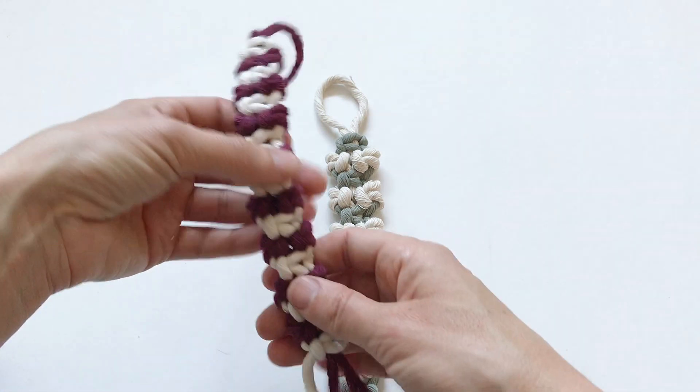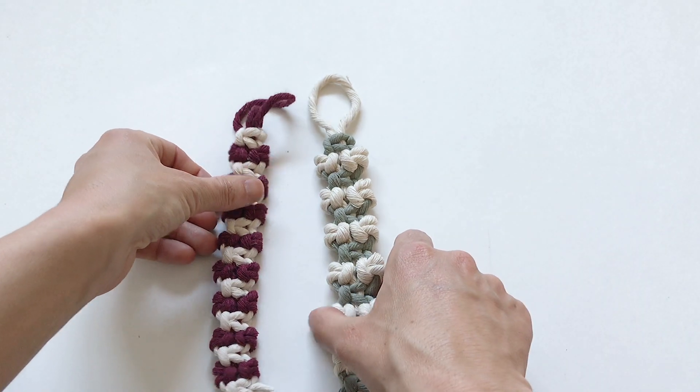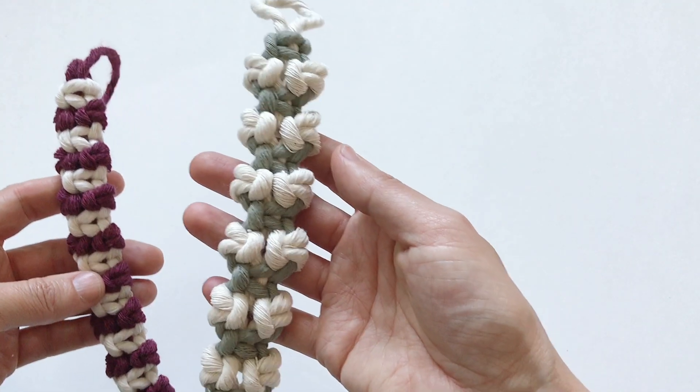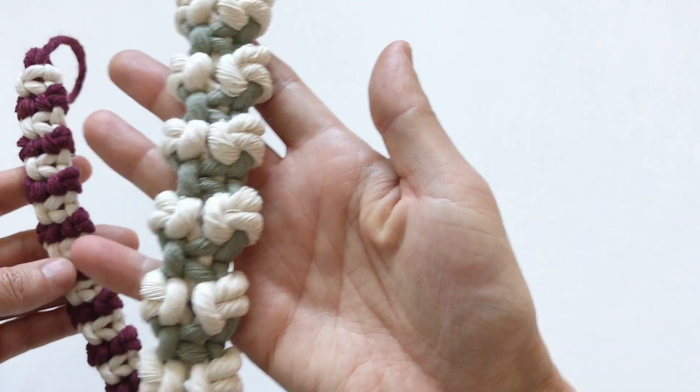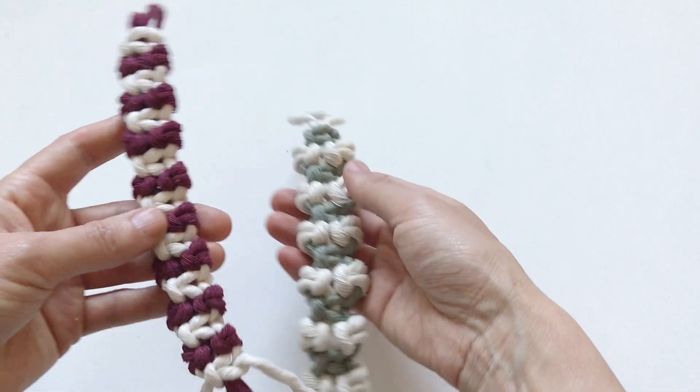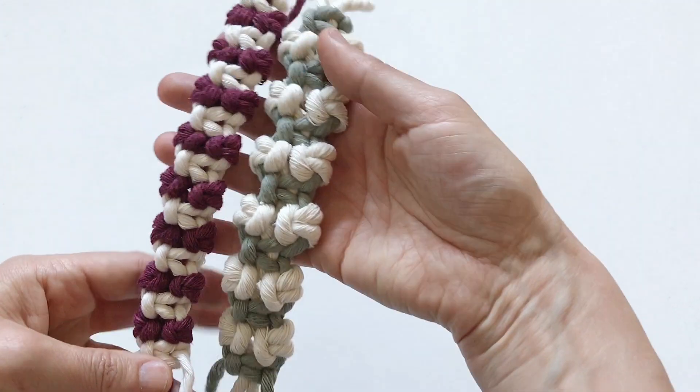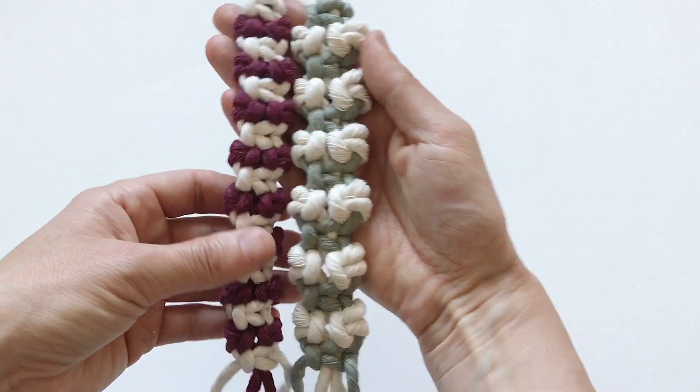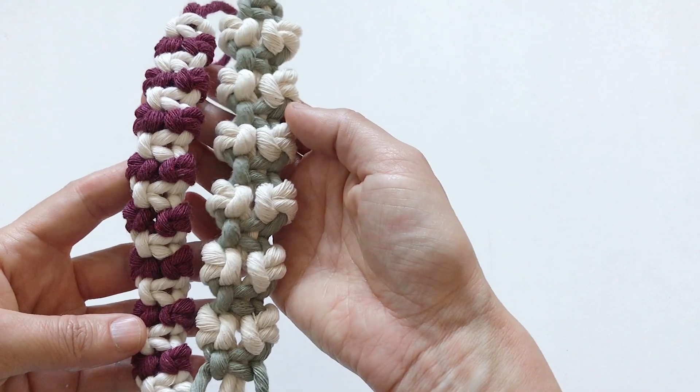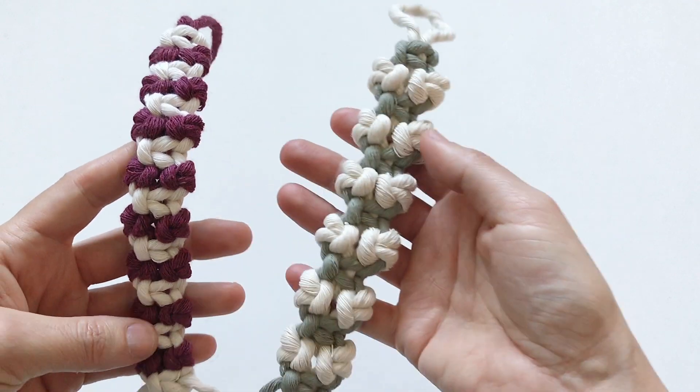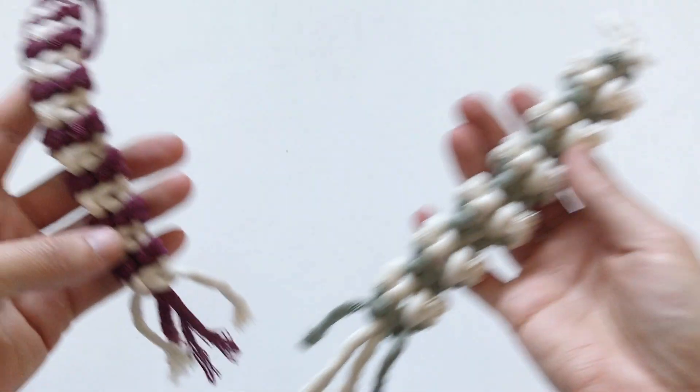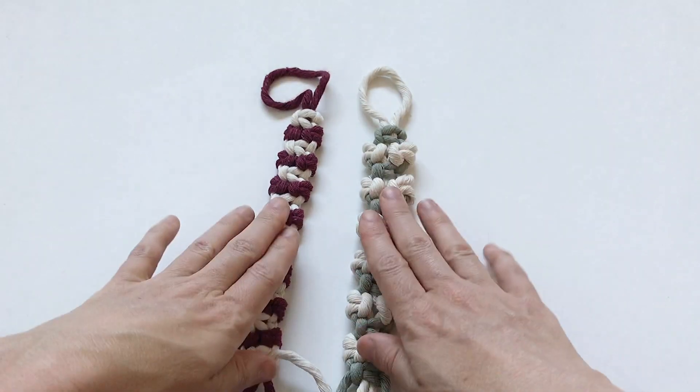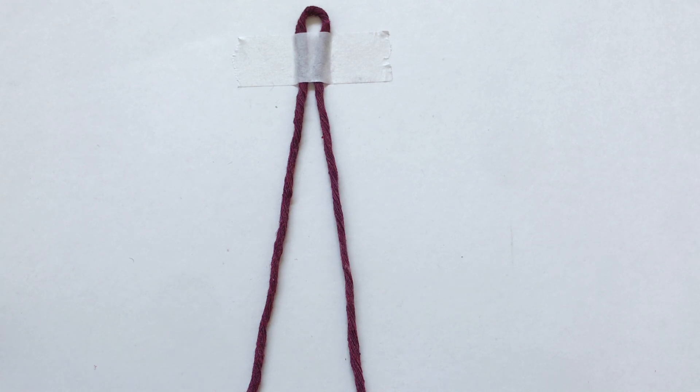Hey guys, I want to show you this beautiful pattern we're going to make today and what a difference it makes with different strings. The one on my right is five millimeter, and this is with three millimeter single ply. You can see the difference, but they're both so beautiful. You can use this for key chains, plant hangers, or layers of your wall hangings coming down. Let's get started.